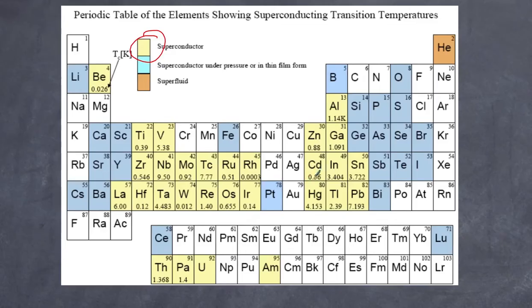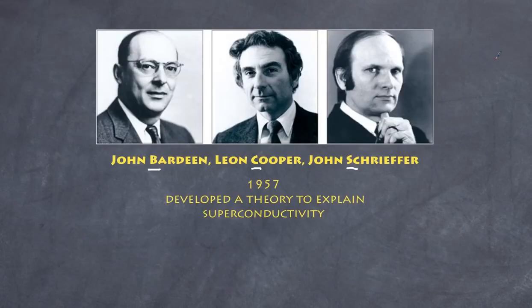The development of the BCS theory was done by three scientists named John Bardeen, Leon Cooper, and John Schrieffer. The theory came from the first initial of their last name. They developed this in 1957. Some of you may be aware that Bardeen was also instrumental in developing the first transistor in the early 50s.